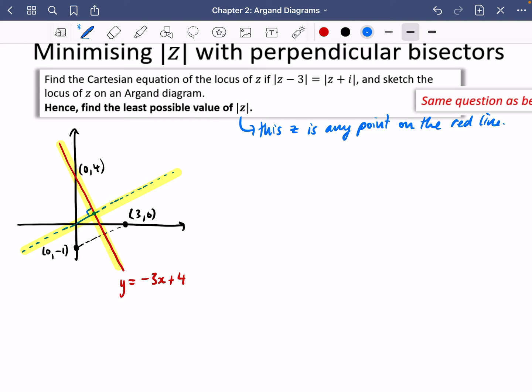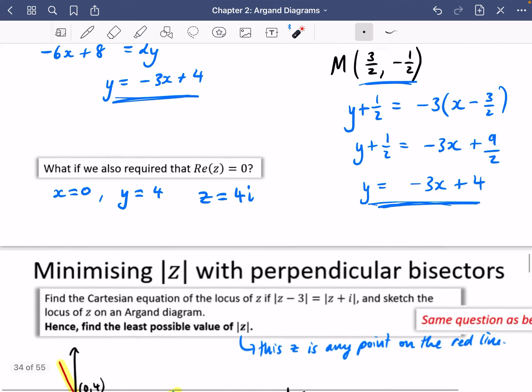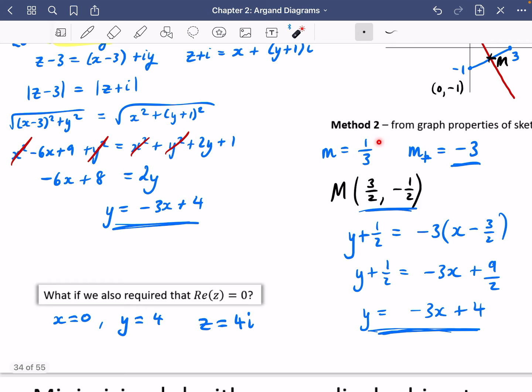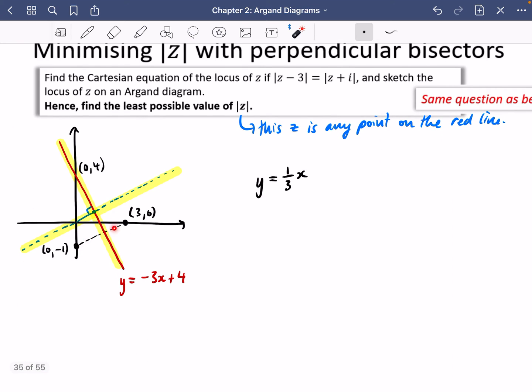So pretty obvious. This line that we've got here has a really, really simple equation. Can you think to yourself what that equation should be? That equation is just going to be y equals a third x. The reason we know it's a third x is because we worked out the gradient between these two points earlier on. The gradient between these two points was a third and that was perpendicular to this line. So the gradient must be a third here.